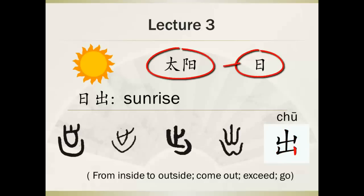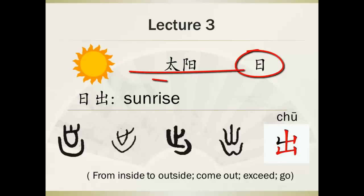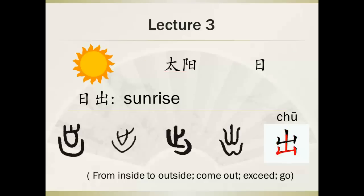But 日 doesn't show up in the word 太阳, which means the sun. So is there any place in modern Chinese where 日 can represent the sun? The answer is yes — in some characters, 日 means the sun. Here I'm going to show you an example. This character, 日出, means sunrise. It's a noun, usually used to describe the view of the sunrise.